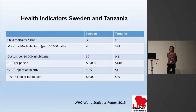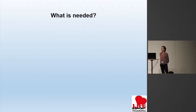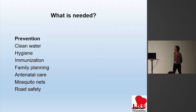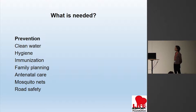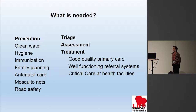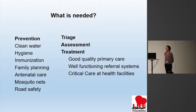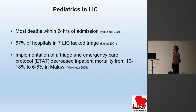So now we know why children are dying and we know the health indicators of Tanzania. What is needed? We know that prevention — clean water, hygiene, immunization, and mosquito nets — will prevent a lot of infectious disease. Family planning and antenatal care reduce premature births and complications with maternal mortality. Triage assessment and treatment is really important, and when it comes to treatment we need good primary care, well-functioning referral systems, and good critical care at health facilities. That is what Life Support has been working on.